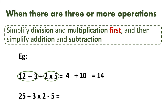Let us look into another example: 25 plus 3 into 2 minus 5. The order of operations here is addition, multiplication, and subtraction. According to the rule, we have to perform divisions and multiplications first. So I select 3 into 2 as the first operation. I write 25 as it is, then plus 3 into 2 is 6, then minus 5 as it is. Now from left to right I perform the remaining addition and subtraction: 25 plus 6 is 31, 31 minus 5 is 26. So 26 is the final answer.